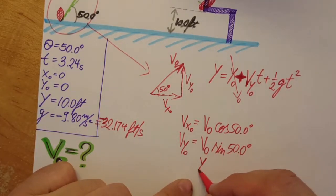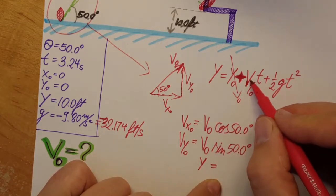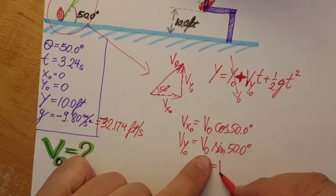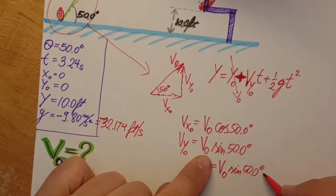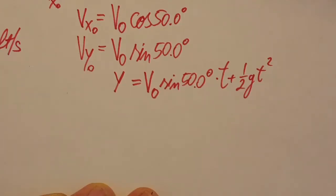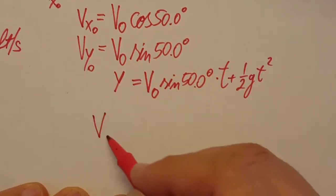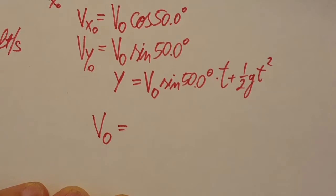Okay I'm gonna rewrite it. Y equals this term is gone, right here we're gonna go ahead and plug this in: v naught sine of 50 degrees times t plus one half g t squared. We are interested in v naught so let's solve for it.